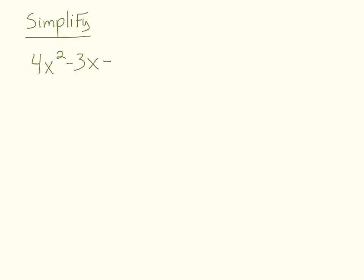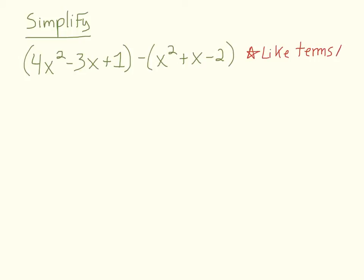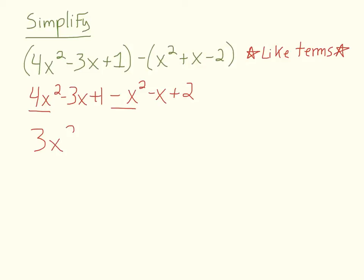So an example of a polynomial could be 4x squared minus 3x plus 1, and let's say that's being subtracted by x squared plus x minus 2. The main thing you want to remember here is to combine like terms. But first we want to distribute the negative through to each term. So we have 4x squared minus 3x plus 1 minus x squared minus x plus 2. Now you see you have 4x squared and x squared, which becomes 3x squared. Then negative 3x and negative x becomes minus 4x. And 1 and 2 will just be 3.